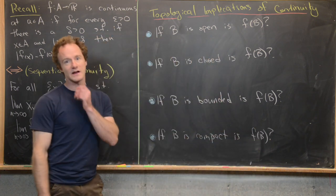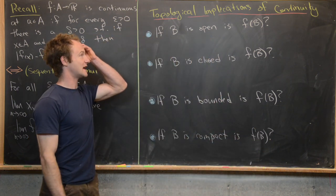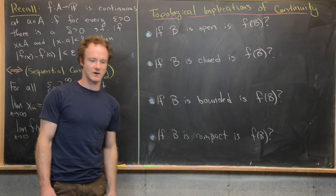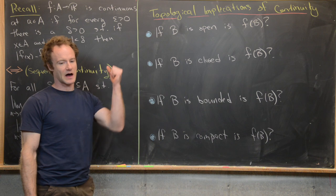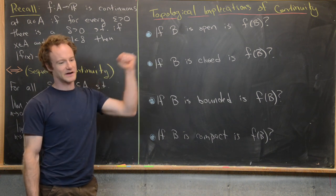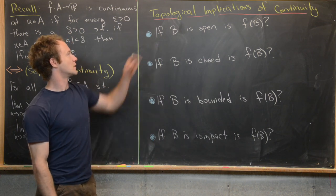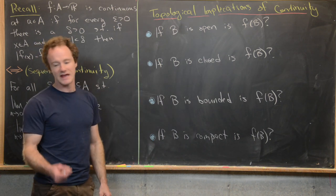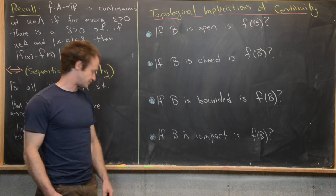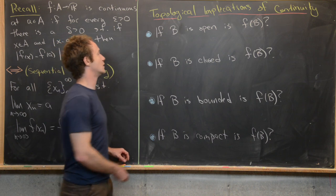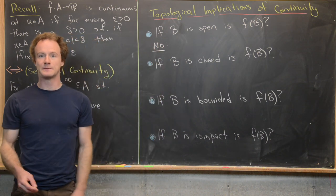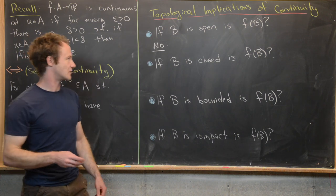Now we want to look at some topological implications of continuity in the forward direction of the function — if we know something about a set in the domain, what can we say about its image? The first question is: if B is open, is f(B) open? The answer is no, and we can furnish a counterexample without looking very hard.